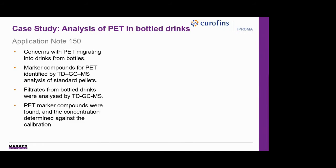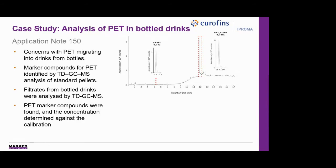Firstly, the marker compound for PET was identified by analysing standard pellets by direct thermal desorption. 2,4-di-tert-butylphenol was used for quantitation, and tetrahydrofuran was used for confirmation. QC checks confirmed that blanks showed a zero result for a plastic-free filtration and analysis process, and a spiked sample showed greater than 90% recovery. Using the marker compound, linearity results were calculated and found to produce an excellent R-squared value of 0.9984.